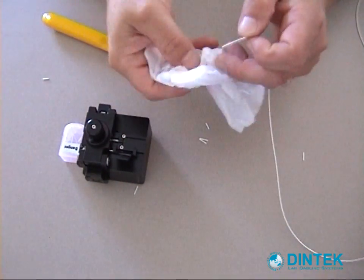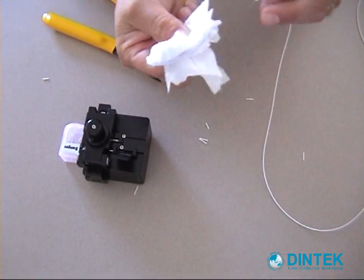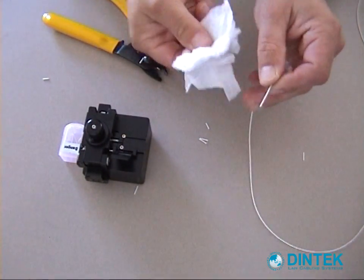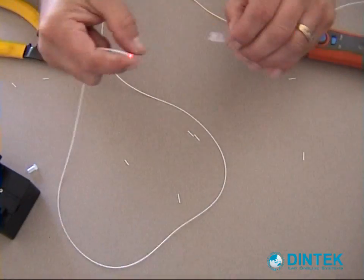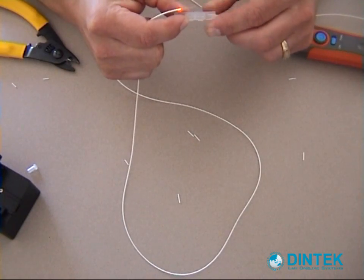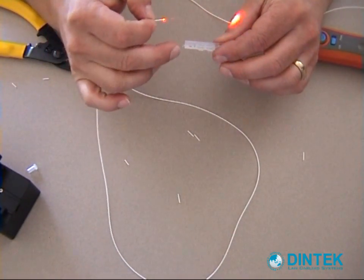Get our wipe and now give this a clean as well. We'll take the fiber splice and we're going to insert the second piece of fiber into the other end. Once again undoing the locking pin.